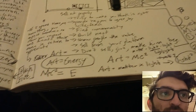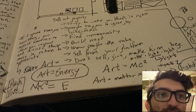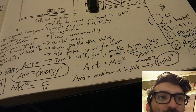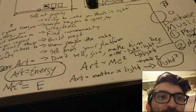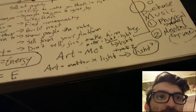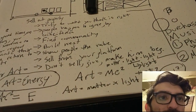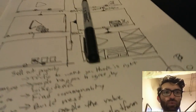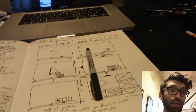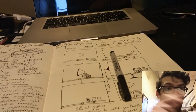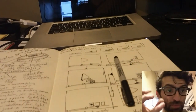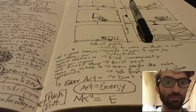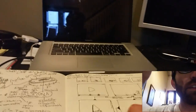Art equals MC squared, because art equals energy. And art equals matter times light times light. Light times light equals sense-making, because that's an interference pattern. When you have two different patterns and you look over time, and multiply that times matter, then you arrive at energy. So this is telling us how to encode energy in the environment and how to change energy in the environment.